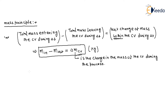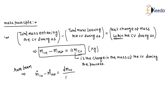It can also be expressed on a rate basis — the rate form. The rate of mass entering the control volume minus the rate of mass leaving the control volume is equal to dMCV/dt.